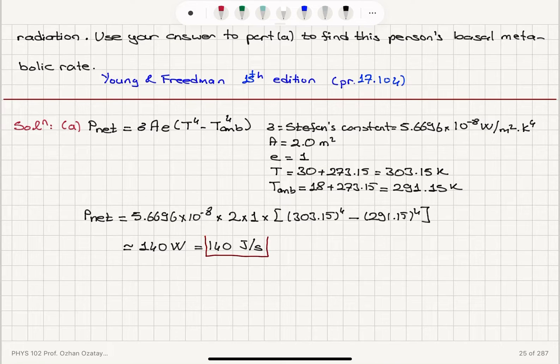140 joules per second is the net amount of heat radiated. Part B says it's the 80% of the energy that is radiated. So 80% of the energy consumed by the body goes to thermal radiation, 140 joules in one second.